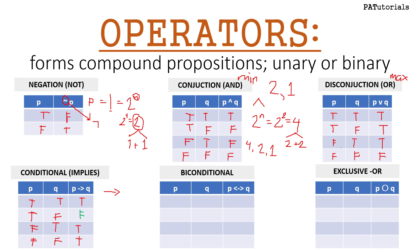The biconditional is very easy because it speaks of equivalency, symbolized by a double arrow. The only true values occur when both sides are the same: true biconditional true is true, and false biconditional false is true.